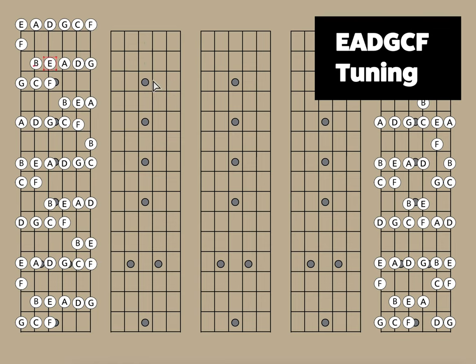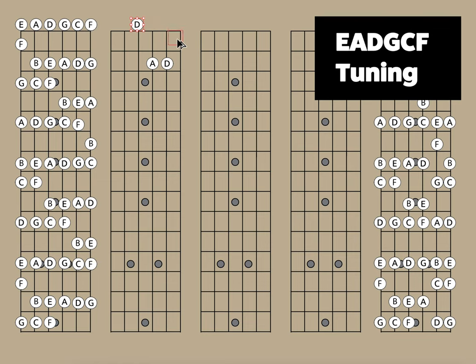Let's take a look at one more — the D chord. We have D, we have A, and D right here. The F sharp would be right here. It's probably the one that would be a little bit easier — it looks just like the A minor. So you could see from these chords what would happen.